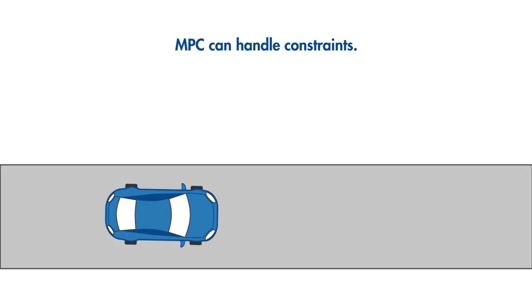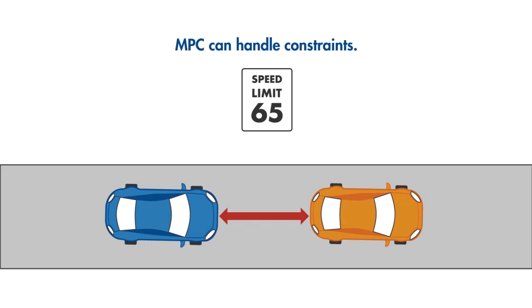Another strength of MPC is that it can handle constraints. Constraints are important because violating them can lead to undesired consequences. For example, some of the safety constraints while driving are that cars must obey speed limits and maintain a safe distance from other cars.